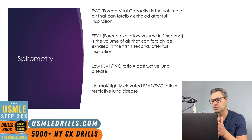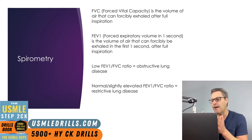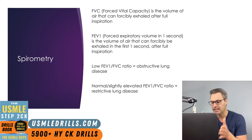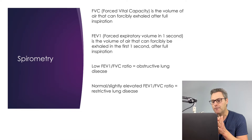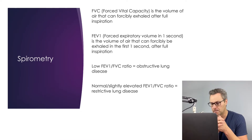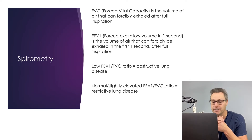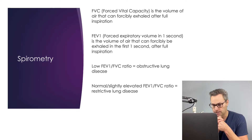On the other hand, in restrictive lung diseases, the FEV1 to FVC ratio is normal or even slightly increased because the FEV1 and FVC are both reduced proportionally. So remember, if you get a low FEV1 to FVC ratio, think obstructive lung disease. If you see a normal or slightly elevated FEV1 to FVC ratio, you're thinking restrictive lung disease.